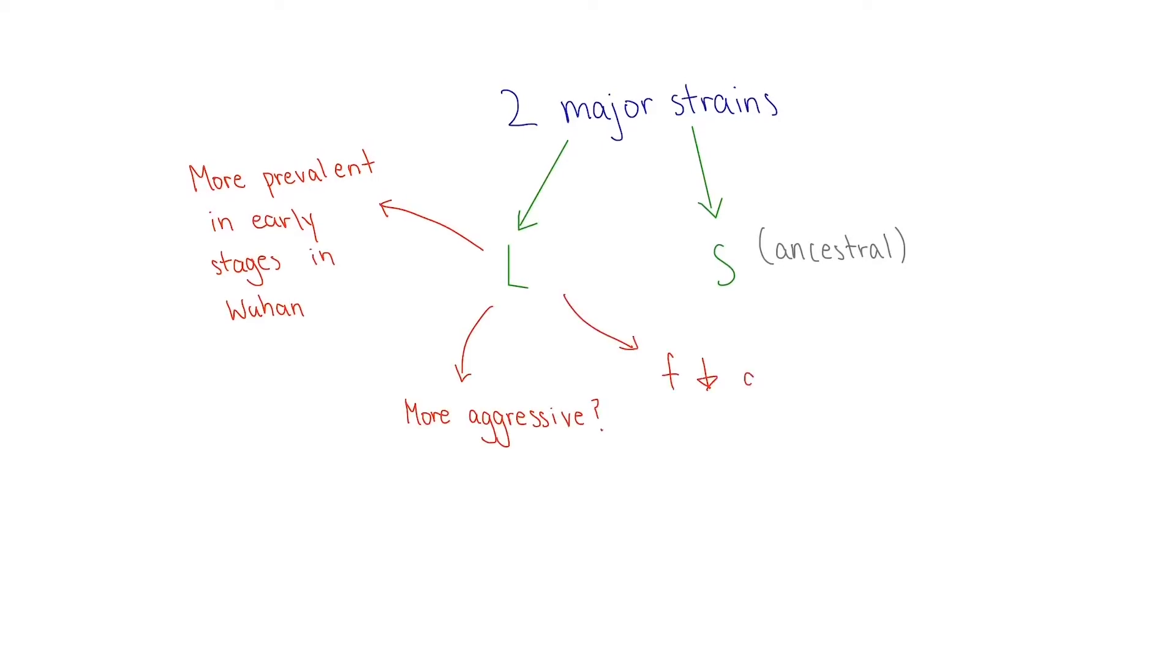A preliminary study suggests that there are two major types or strains of the SARS-CoV-2 virus in China, designated L and S. The L type was found to be more prevalent during the early stages of the outbreak in Wuhan City and may be more aggressive, but its frequency decreased after early January.